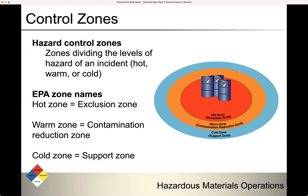We've got some hazard control zones terminology. These are the zones dividing the levels of hazard of an incident. We usually call these hot, warm, or cold — the colloquial terms. The EPA has other names. For what we call the hot zone, the EPA calls the exclusion zone, meaning nobody in. The warm zone is the contamination reduction zone. And the cold zone is the support zone, according to the EPA.